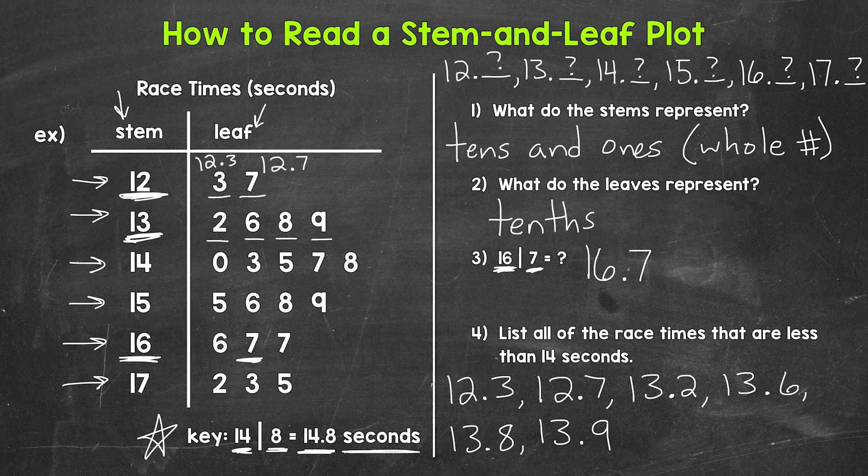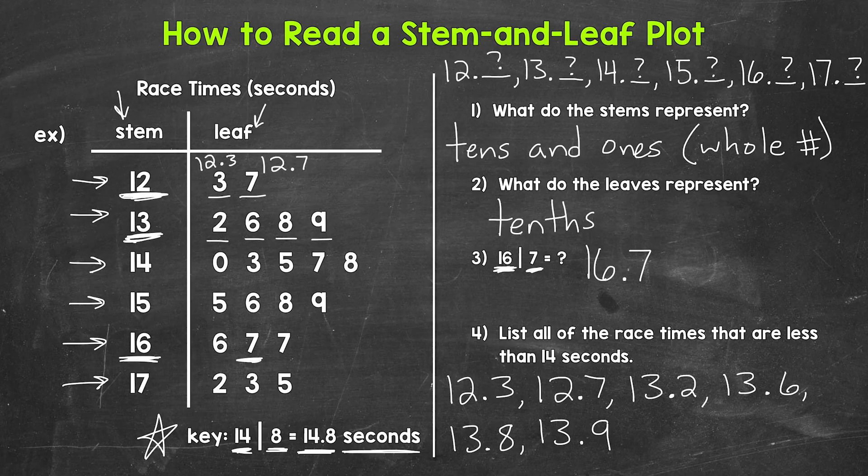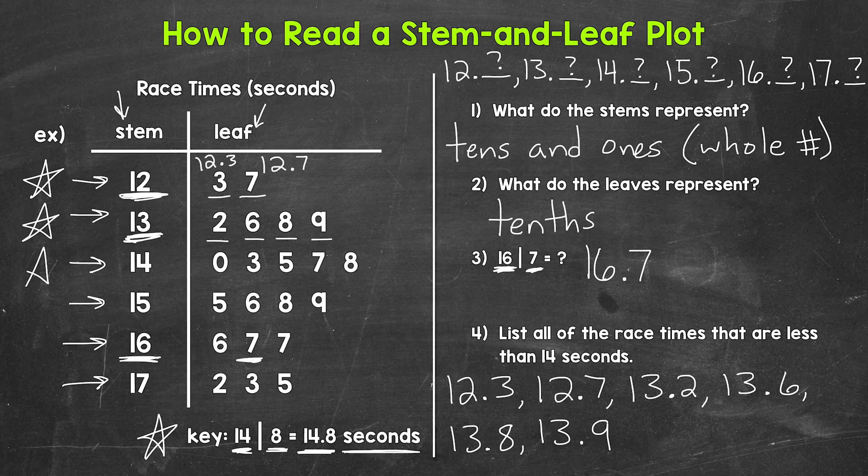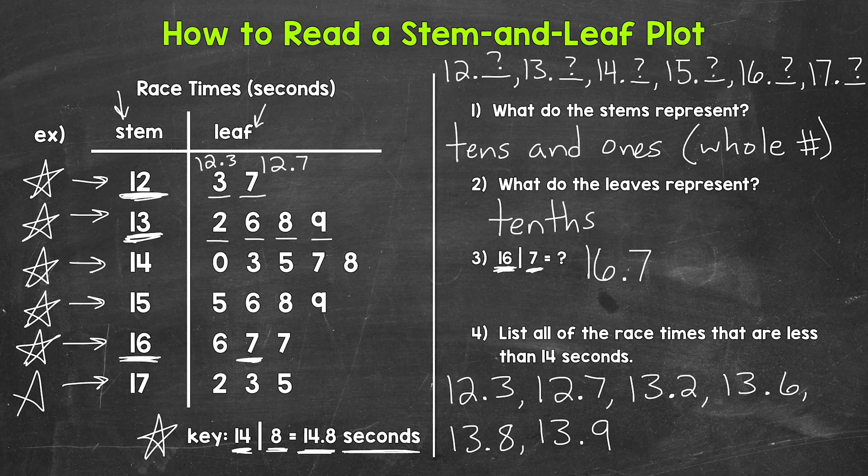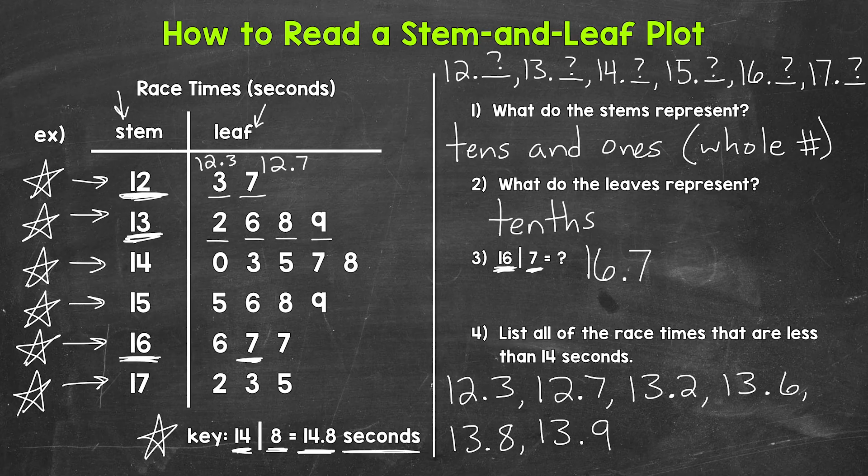Before we wrap up, looking at the stem and leaf plot, we have all of the race times organized. We have all of the 12 second times, 13 second times, 14 second times, 15 second times, 16 second times, and 17 second times. So everything's in order, grouped, and organized.